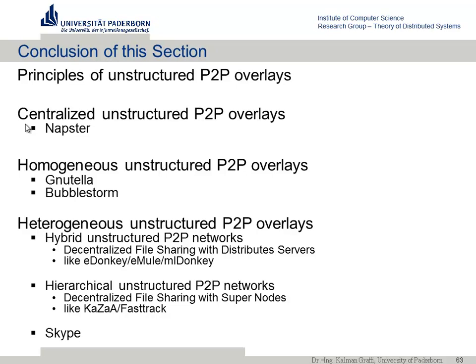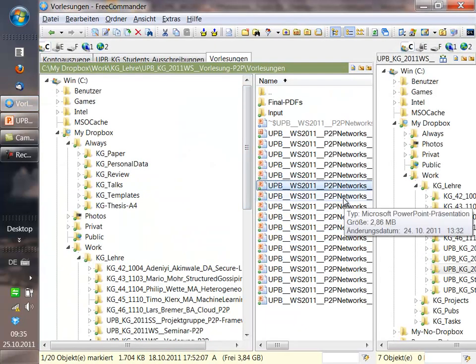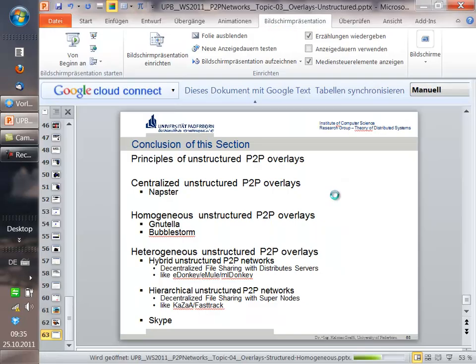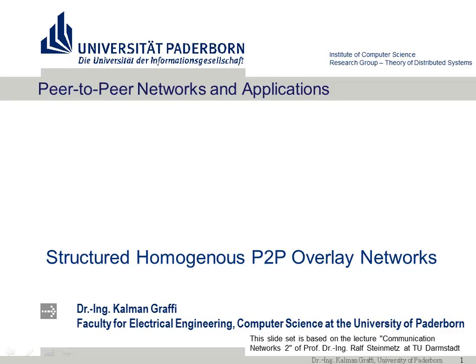That was the final content on unstructured P2P overlays. We covered centralized P2P (Napster), homogeneous overlays (Gnutella, BubbleStorm), and heterogeneous unstructured networks (eDonkey, Kazaa, Skype). Now we move to structured P2P overlays, looking at distributed hash tables — what they are, their principles, operations, and prominent examples like Chord, Content Addressable Network (CAN), PAST3, and key-based routing interfaces like Freepastry and Kademlia.